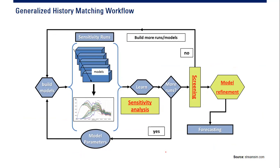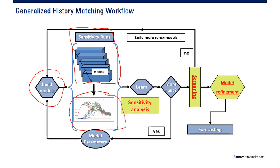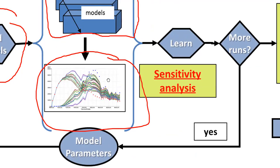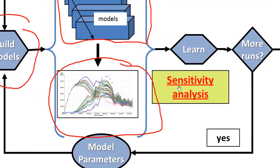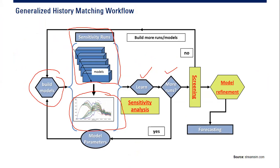This is the workflow for history matching. First we have the model, then we create sensitivity runs — possible scenarios — and then we get the history matching result. We do sensitivity analysis, then ask: do we need more runs, do we need more scenarios? If yes, we update the model parameters and do the sensitivity run again. Then we do screening, and if acceptable, we do model refinement. After obtaining a good matched model, we can do forecasting.